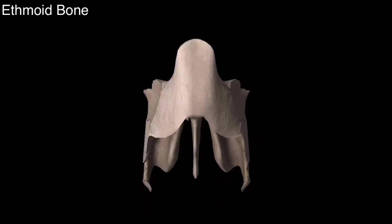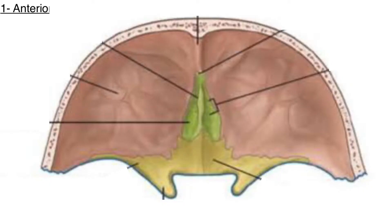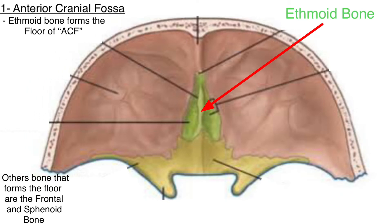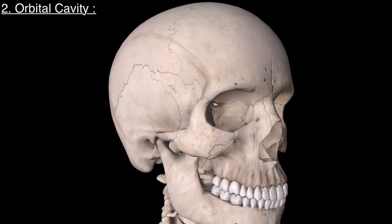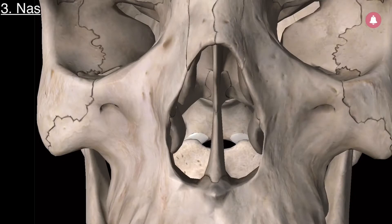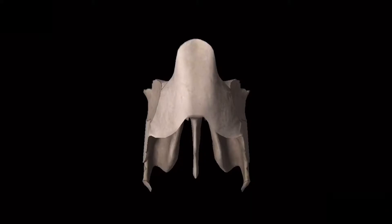Before going into the detailed discussion of the ethmoid bone, you should know a few things about it. The ethmoid bone has contribution in the anterior cranial fossa, the orbital cavity, and also in the nasal cavity. It forms the floor of the anterior cranial fossa, contributes to the medial wall of the orbital cavity, and forms the nasal septum and the lateral wall of the nasal cavity. We will discuss each of these in detail as we move forward.